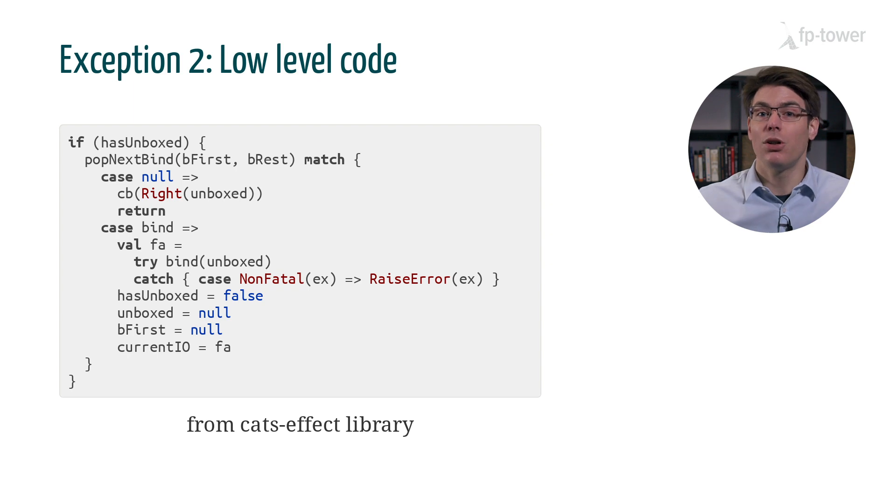Still, if you look at the code of performance-sensitive libraries such as Cats Effect, you might see some low-level code that looks like this one, so don't be surprised. That said, I will really avoid writing this sort of code as much as possible because it's error-prone and very difficult to maintain. So we should only do this when the extra performance is absolutely critical to our program.